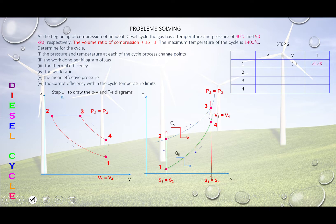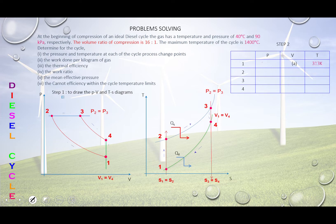The given pressure is 90 kPa, entered in the first row of the pressure column. The initial temperature is 40 degrees C, which converts to 313 K (40 + 273). The maximum temperature T3, seen on the TS diagram, is 1400 degrees C, which gives 1673 K (1400 + 273).